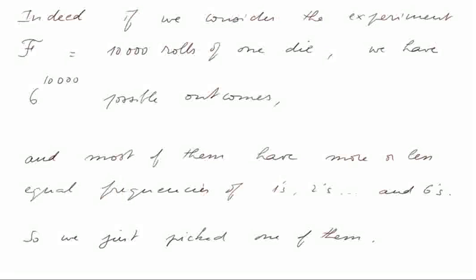Indeed, if we consider the experiment F, which is itself 10,000 rolls of one die, F is an experiment producing a series of rolls, and we have 6 to the power 10,000 possible outcomes, because the first outcome can be one up to six, the second one up to six, etc. It so happens that most of these huge number of outcomes have more or less equal frequencies of ones, twos, up to sixes. So we just picked one of them.